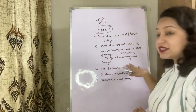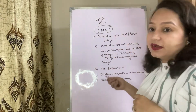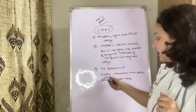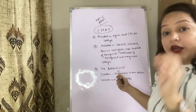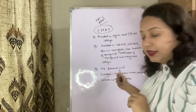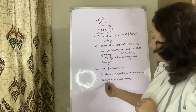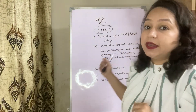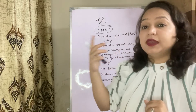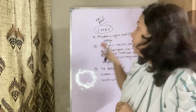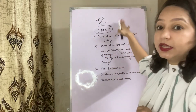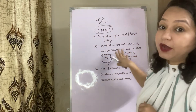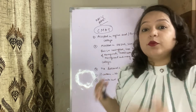In CMAT there is no section time limit. The exam has 5 sections with 20 questions each. You get 4 marks for a correct answer and 1 mark is deducted for a wrong answer. CMAT is a good choice because after clearing it many options open up for admission to top business schools.